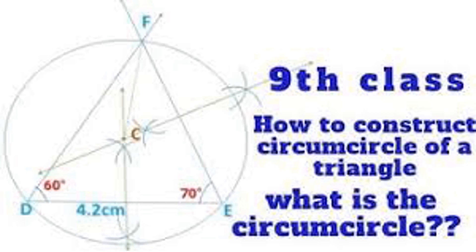Draw the perpendicular bisectors of any two sides of the triangle. I have taught you how to draw perpendicular bisectors in previous lessons, so you are able to draw them for any two sides. Name the point of intersection of the perpendicular bisectors as C. Then join segment CF. Draw a circle with center C and radius CF. The required circle will be the circumcircle of the given triangle DEF.